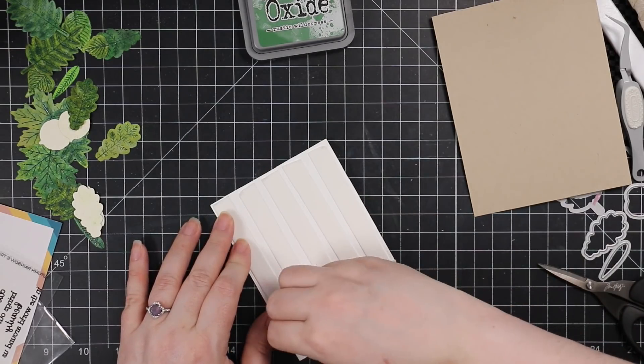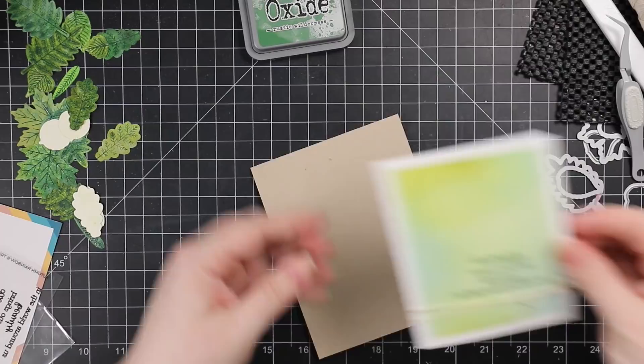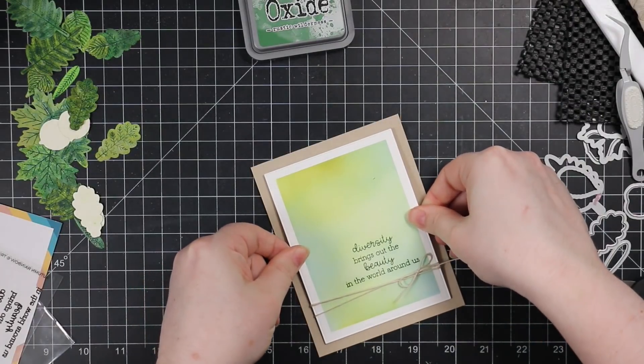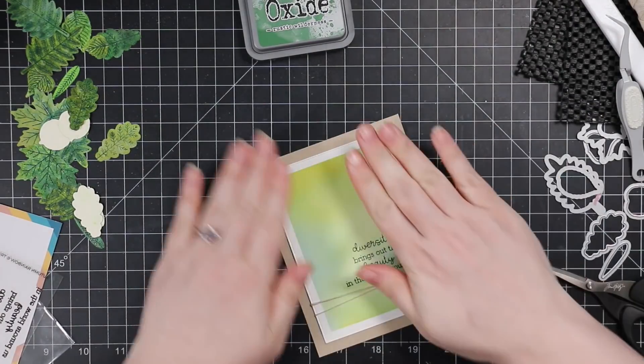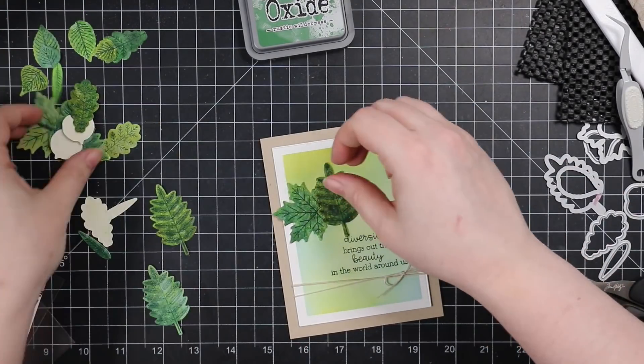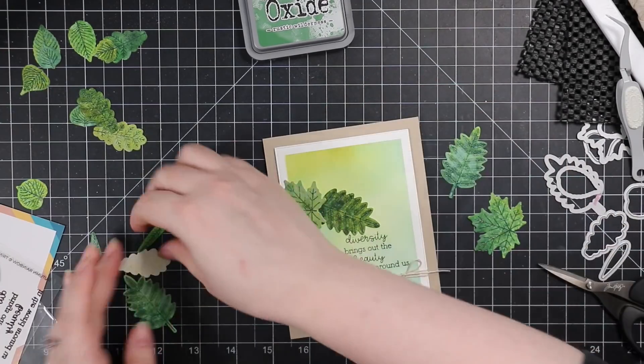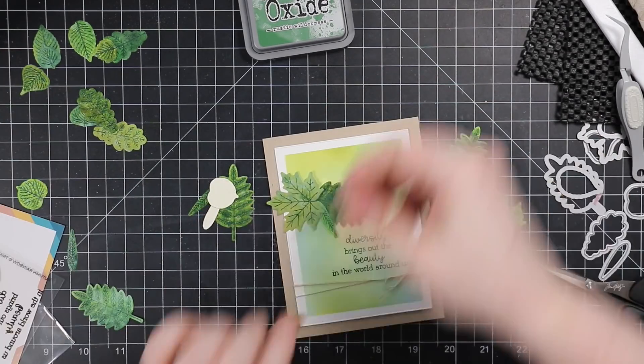So once I've got the card front applied to the card base, then I'm going to start arranging my leaf clusters. Again, I had this rough idea from the get go of how I was going to do this.